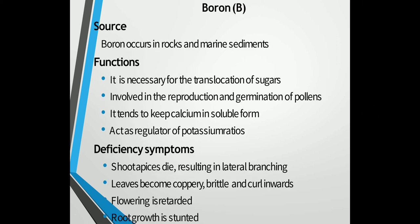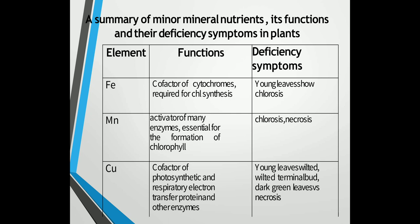The last micronutrient is boron. Boron occurs in rocks and marine sediments. It is absorbed in the form of borate ions and has some antagonism with calcium, potassium and other cations. It is necessary for the translocation of sugars and is involved in the reproduction and germination of pollen grains. It tends to keep calcium in soluble form and acts as a regulator of potassium ratios. Deficiency leads to shoot apices dying, resulting in lateral branching; leaves become coppery, brittle and curl inwards; flowering is retarded and root growth is stunted.